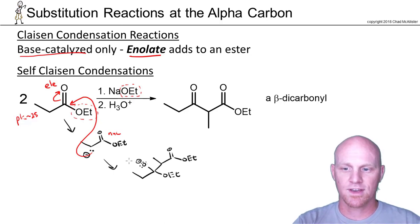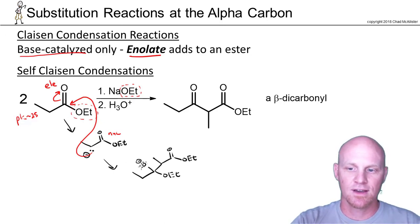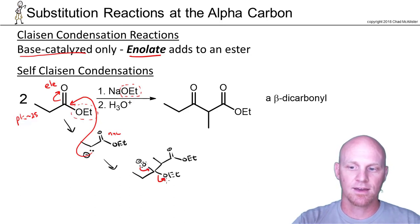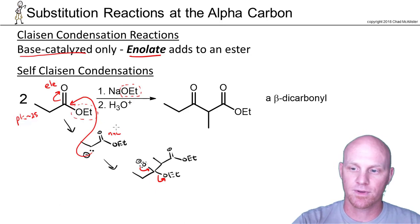The intermediate looks like a tetrahedral adduct, and just like normally with nucleophilic acyl substitution, those electrons come right back down, reform the double bond to oxygen, and kick off our leaving group.